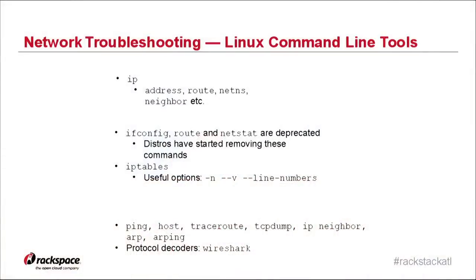As we troubleshoot — how many still use ifconfig to find the IP address of your machine? If you haven't noticed in the man pages, ifconfig is deprecated. With the advent of the iproute2 package, a number of commands are deprecated: ifconfig, route, netstat — all these commands we love to use — those are all deprecated. You need to understand IP address, IP route, IP netns — since we use network namespaces in Neutron heavily when you're using overlapping IPs, you have to understand how network namespaces work. And IP neighbor, which is the replacement for the ARP command.